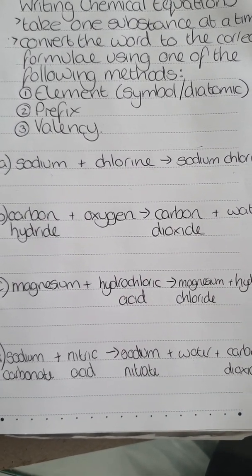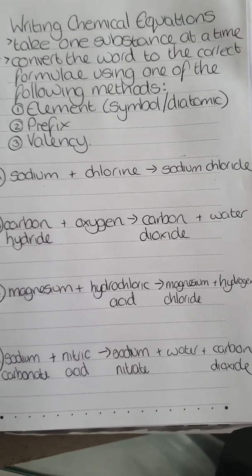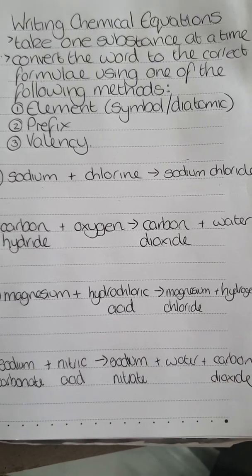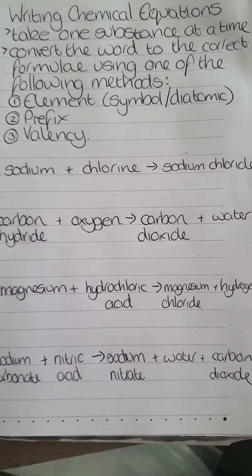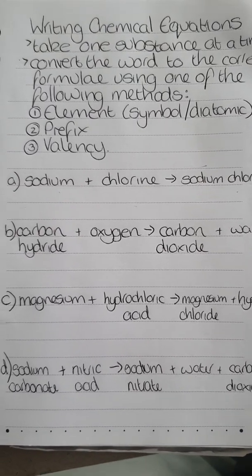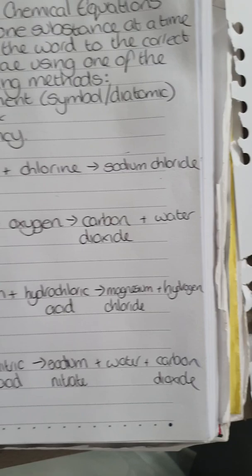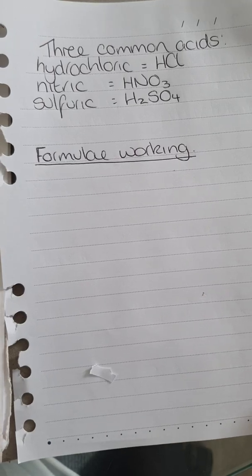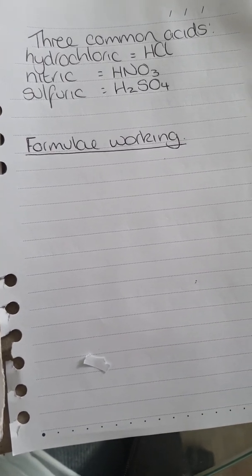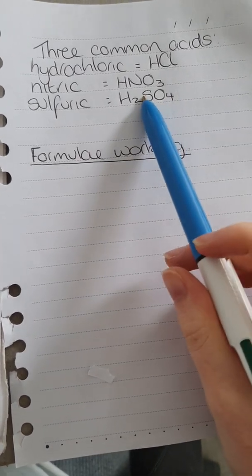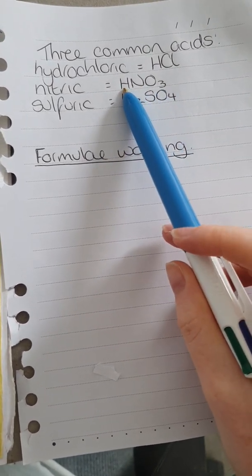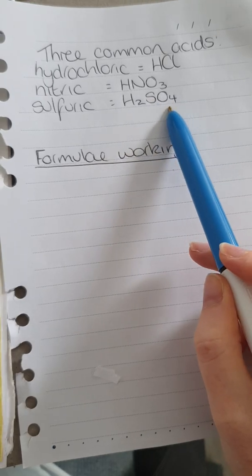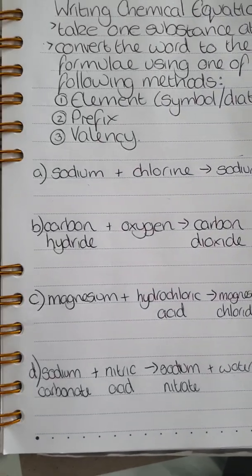There are a couple of questions that refer to acids. We cover acids in another topic — topic four — but some of you may already know them. I've written them here for reference: hydrochloric acid is HCl, nitric acid is HNO3 (similar to nitrate NO3, just with an H), and sulfuric acid is H2SO4, similar to sulfate SO4.